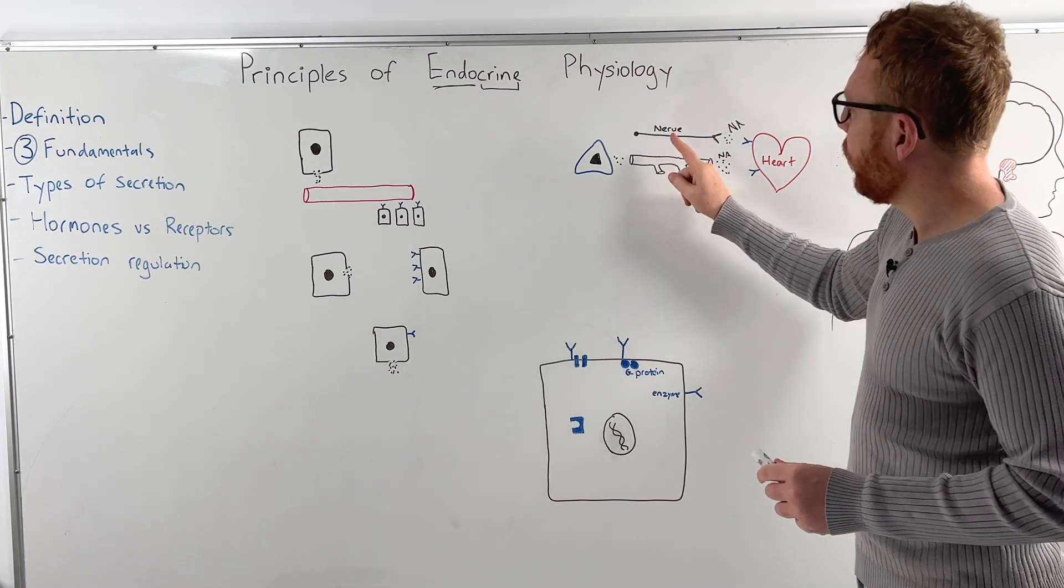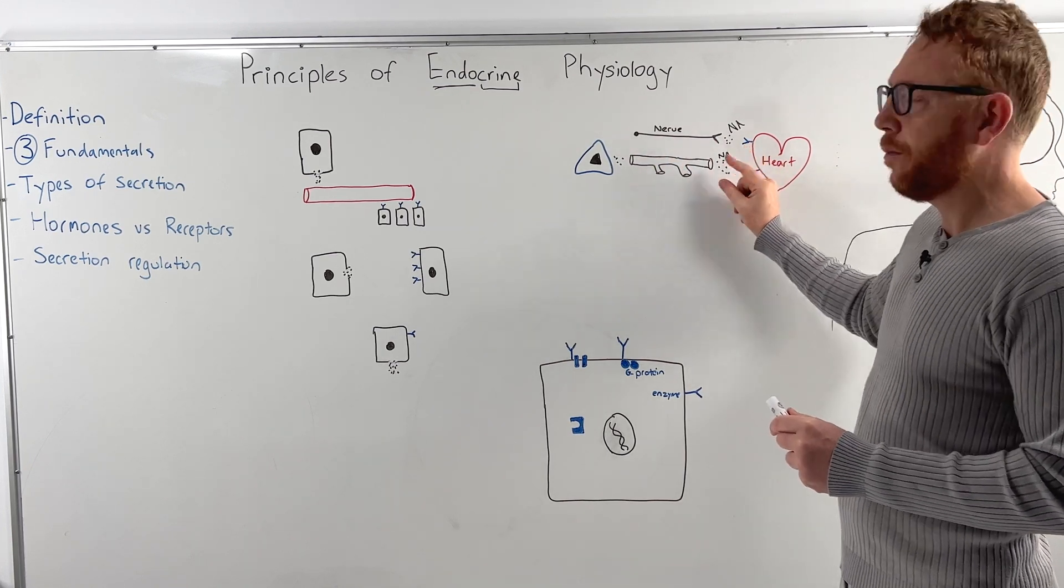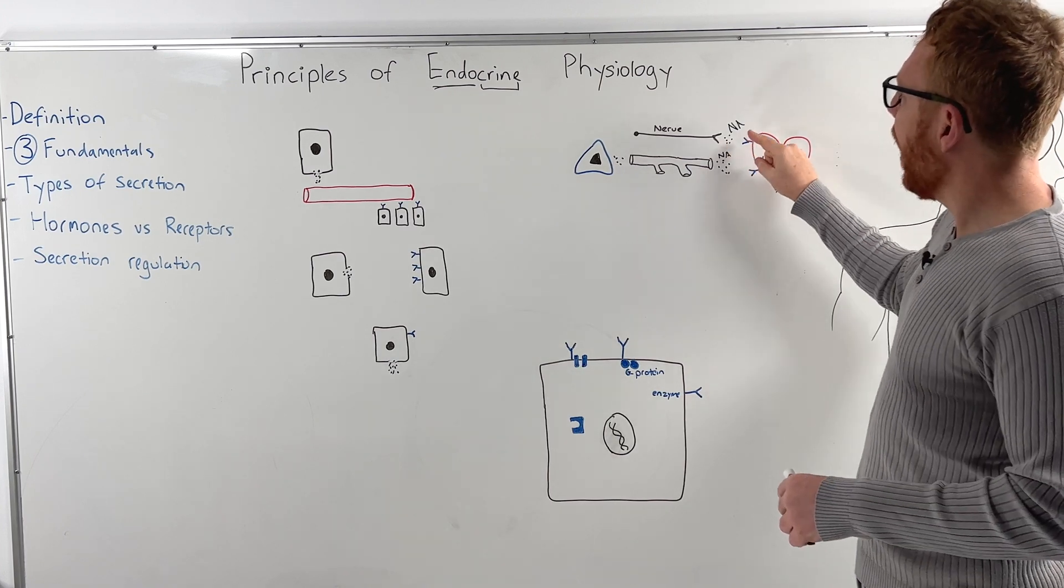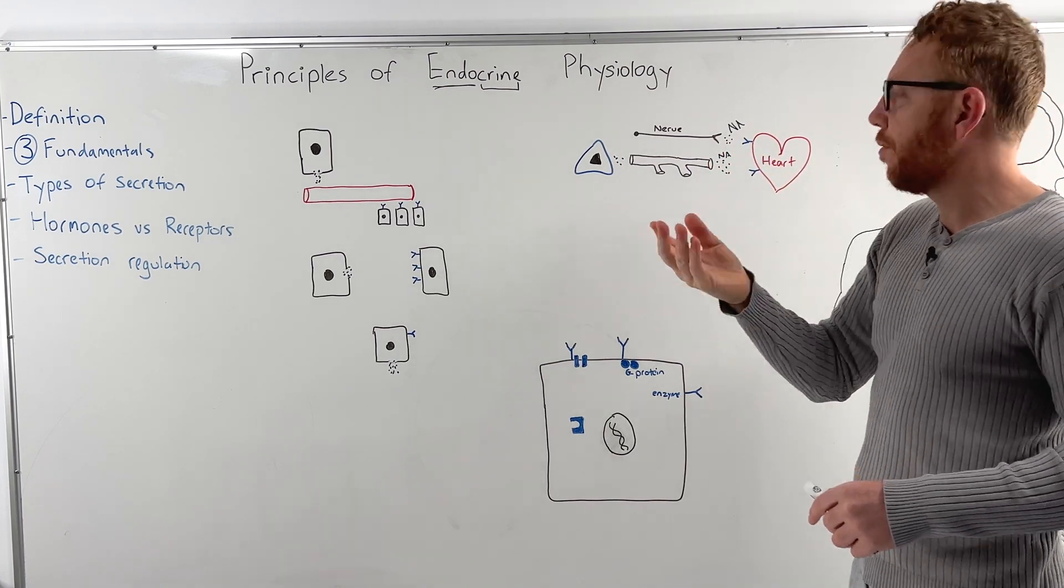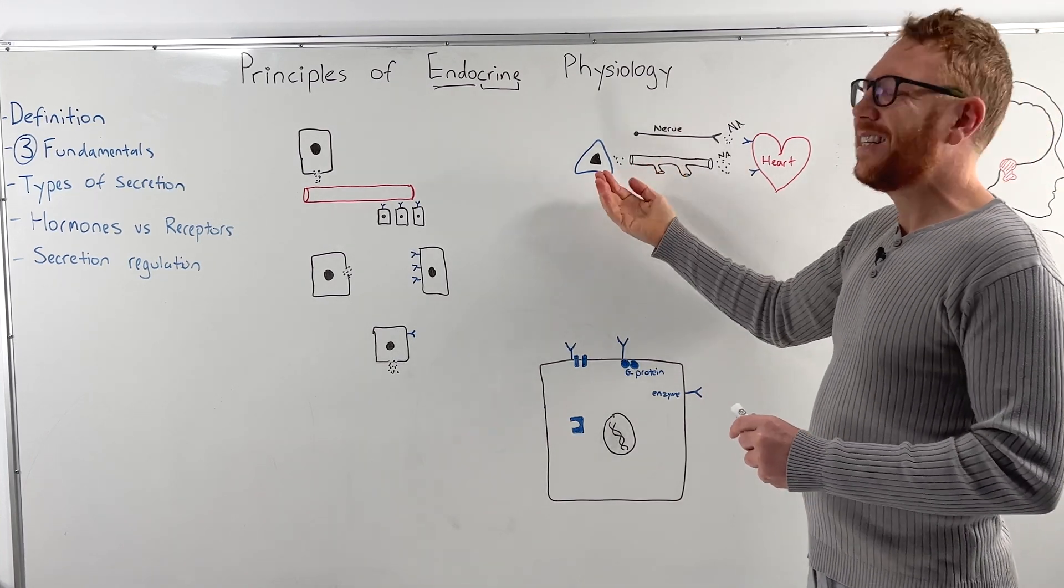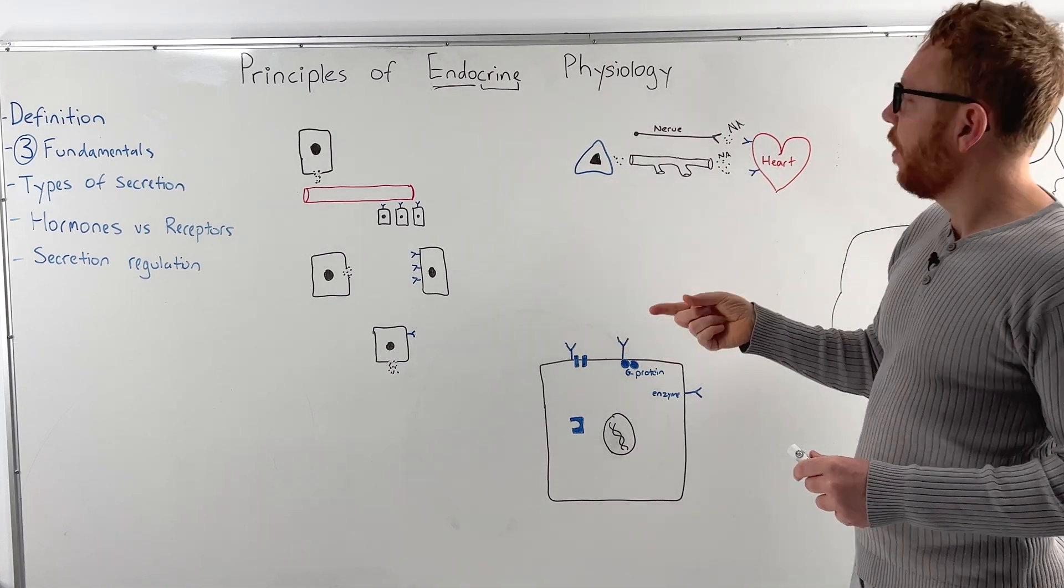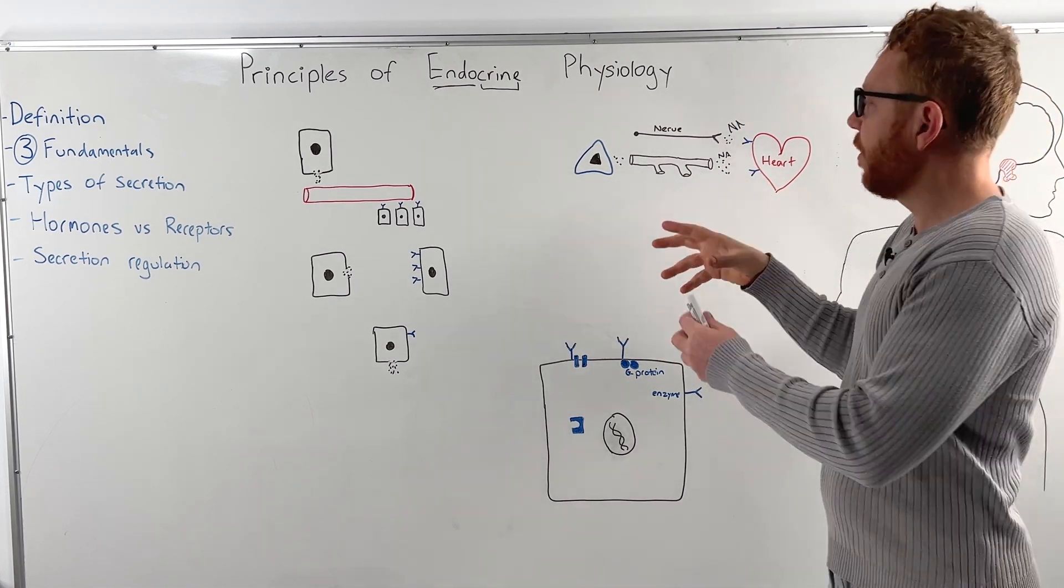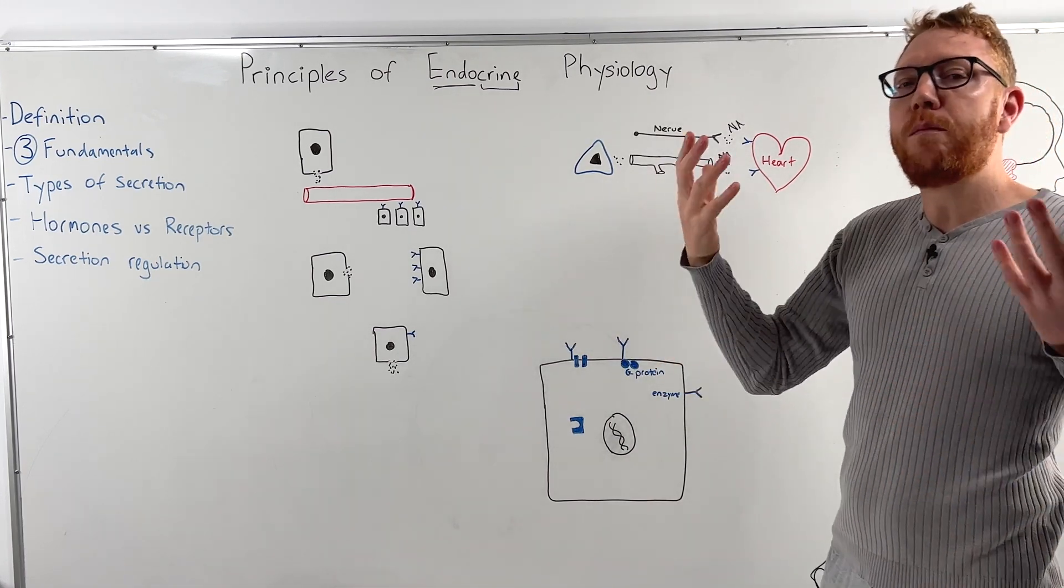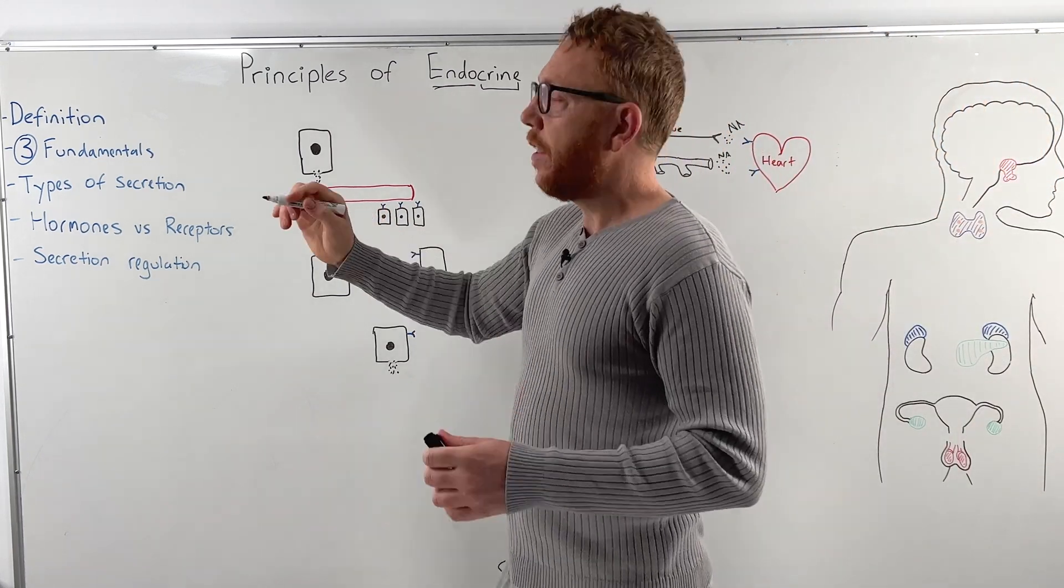So it's also communicating to the heart just like we saw with nerves. But the difference here is with a nerve it's very localized, it's very fast acting because electricity is faster than blood and it's really quick on and quick off. Whereas with the endocrine communication system, because we put it into the blood it takes a lot longer for it to start to work, therefore it takes longer to turn off and it's not very well localized because it goes into the blood, it goes everywhere. So you can imagine that you're going to have more systemic or whole body effects when we use the endocrine system.